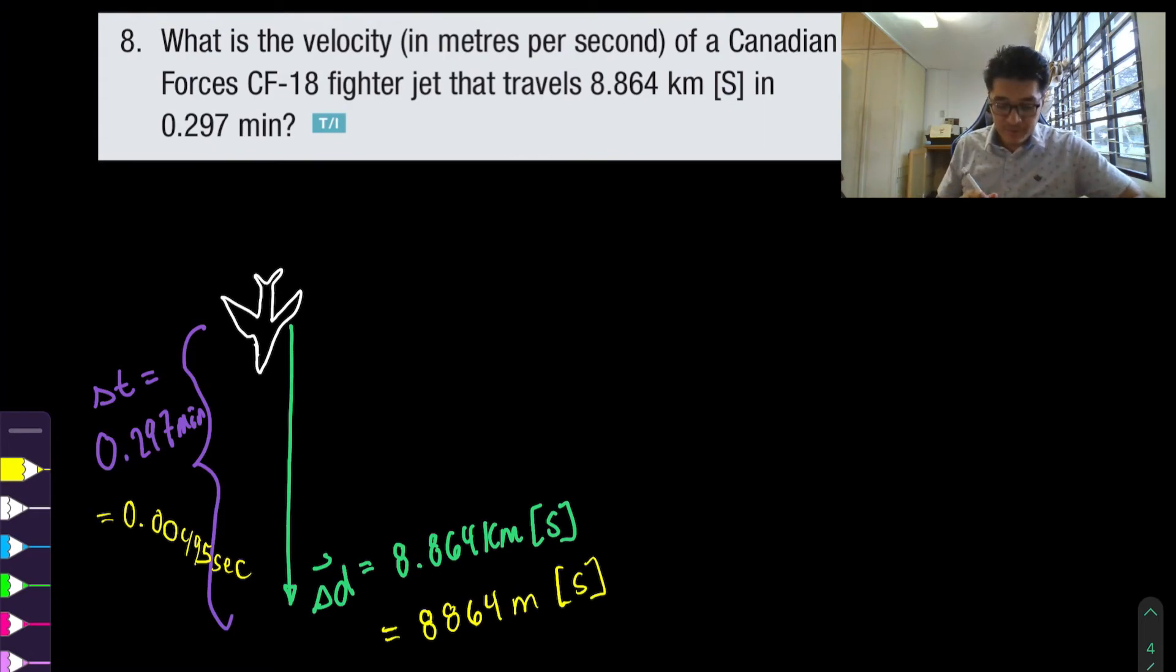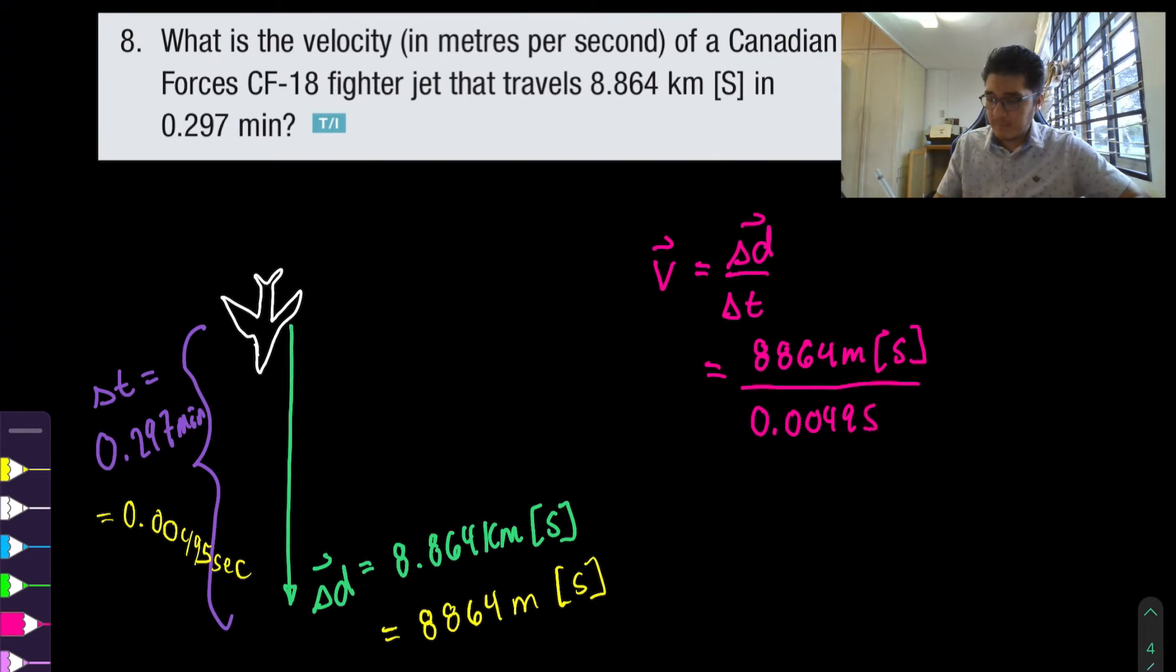And the formula that we're going to be using is the velocity of the object or the fighter jet in this case is the displacement over the change in time. So in this case the displacement we found to be 8.864 meters and the time 0.00495 seconds. Let's just put this into our calculator now.